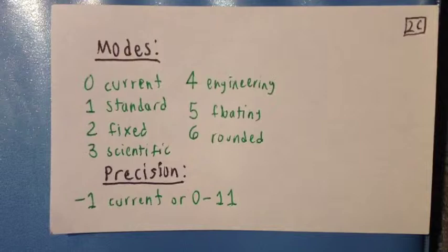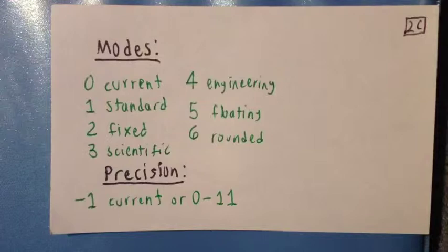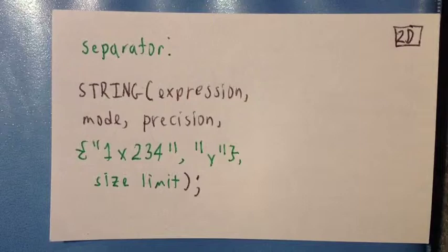For precision, you can enter a negative one, which will take the setting that you have in home settings, or you can specify the number of digits by entering any integer from zero to eleven.